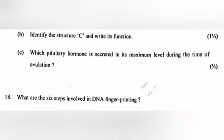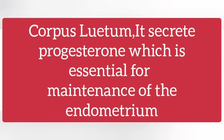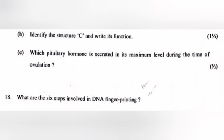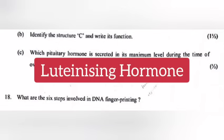Identify the structure C and write its function. Answer: C — Corpus luteum. It secretes progesterone, which is essential for maintenance of the endometrium. Which pituitary hormone is secreted at its maximum level during the time of ovulation? Answer: LH or luteinizing hormone.